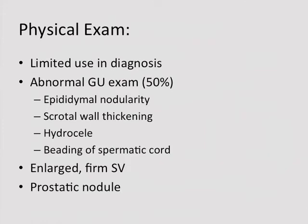Physical exam is of limited use because physical signs usually represent late disease. About 50% of GU-TB patients will have a normal exam. Findings, when present, can include epididymal nodularity, scrotal wall thickening, hydrocele, beading of the spermatic cord, or enlarged firm seminal vesicles or a nodule on the prostate.